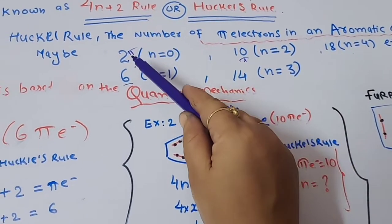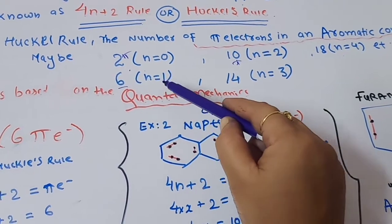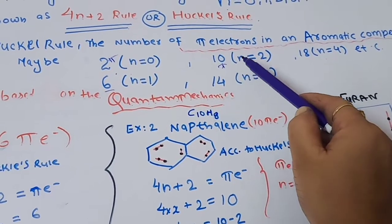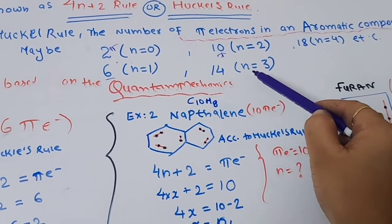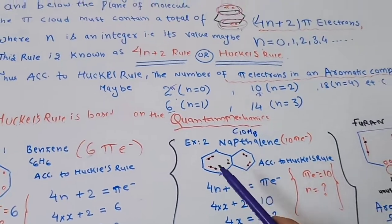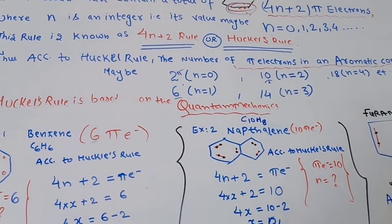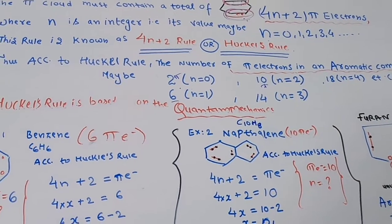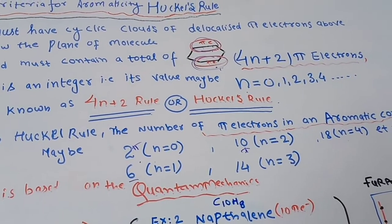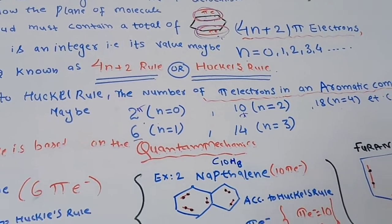If the number of pi electrons is 2, n equals 0. If 6, n equals 1. If 10, n equals 2. If 14, n equals 3, and so on. Huckel's rule is based upon quantum mechanics. For a compound to be aromatic it should give 4n+2 and obey Huckel's rule.